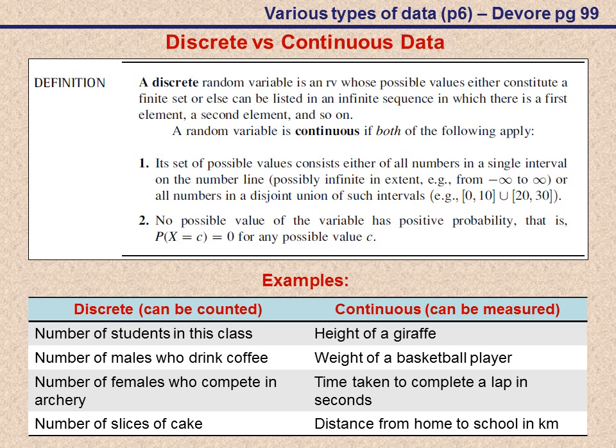The interesting part of continuous data, though, is that usually we record continuous data as discrete data, simply because our measuring instruments normally can't measure the finer details. If we look at a ruler, it might be measuring in centimeters or millimeters. When we measure something, it doesn't mean it's exactly 1.5 centimeters. If we had a finer measuring instrument, we could most probably measure it more accurately. So our variable is still continuous, but we normally record it in a discrete manner.